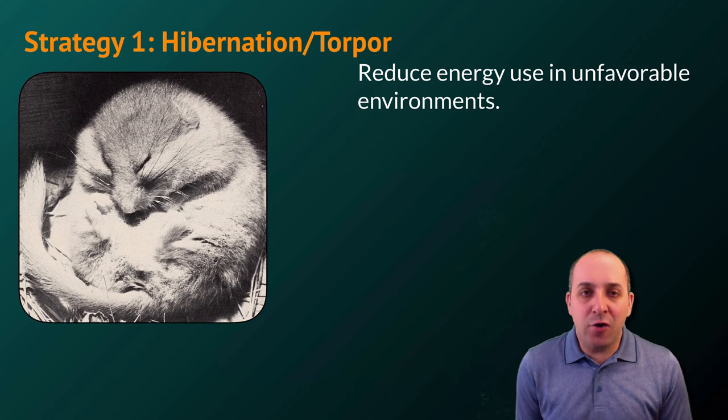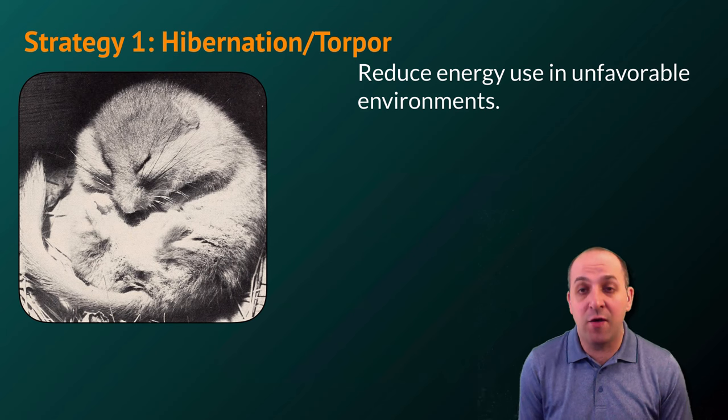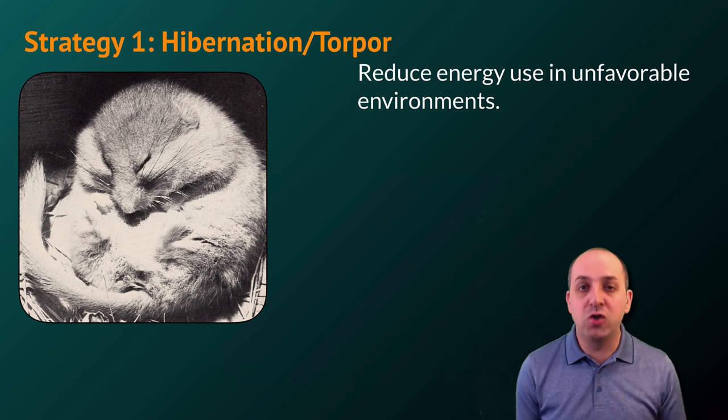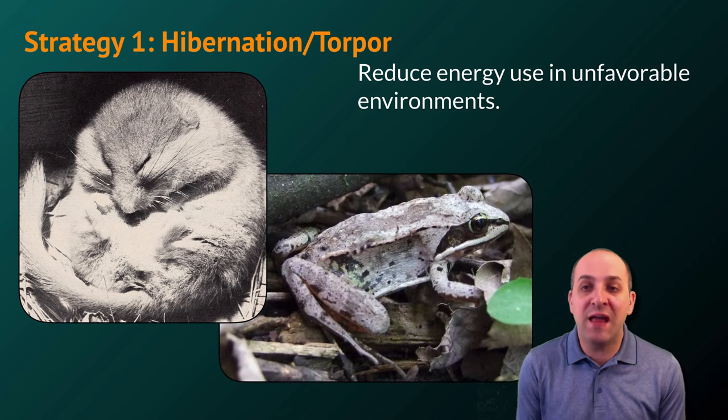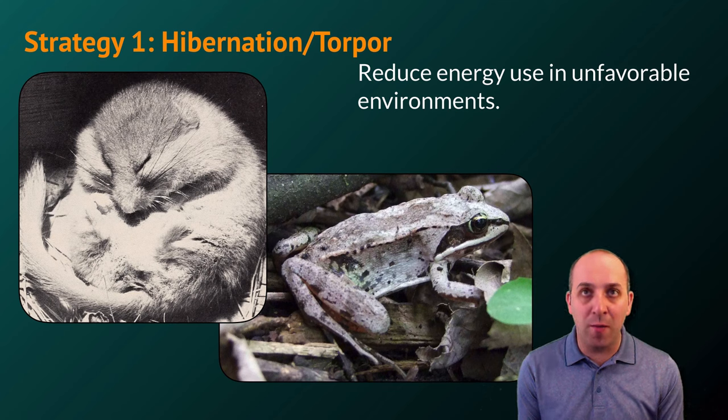Animals are going to adapt to their energetic constraints and the constraints of their environment in different ways. There are a variety of strategies that animals use in order to deal with the energetics of the environment in which they live. A classic example of this is hibernation or torpor, in which animals reduce the energy that they're using in unfavorable environments. Mammals that hibernate generally hibernate during the winter months when there is not a lot of food available for them.